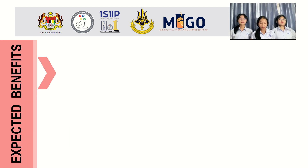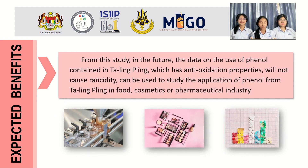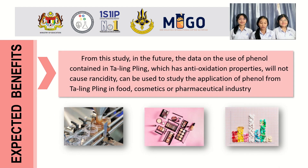For the expected benefit from this study in the future, the data on the use of phenol content in talimbing, which has anti-oxidation properties and will not cause residue, can be used to study the application of phenol from talimbing in food, cosmetic, or pharmaceutical industries.